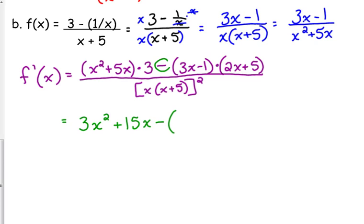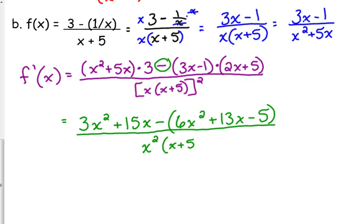No, because of that minus sign right there, you cannot cancel. The other term, the 3x minus 1 and the 2x plus 5, it would have to have the same thing. Okay, so let's FOIL, 6x squared plus 15 minus 2, so plus 13x minus 5, over, I'm going to distribute that squared, so that's x squared, x plus 5 squared. And square the x, and square the x plus 5.